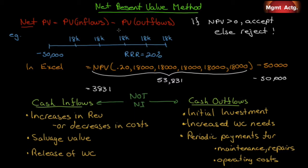Every project requires us to spend money in order to make money. All the money coming in, that's good. All the money going out, that's bad. The question is, as of today, when we take the present value of all the money coming in and all the money going out and take the difference — the net — is the net present value positive? If it is, it implies that the inflows on a present value basis are greater than the outflows. If the net present value is greater than zero, accept; else reject. Simple as that.